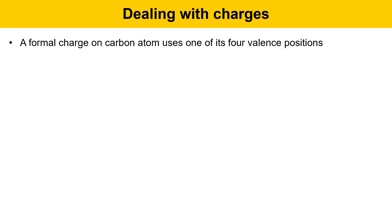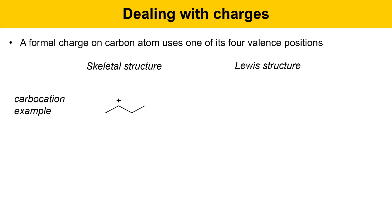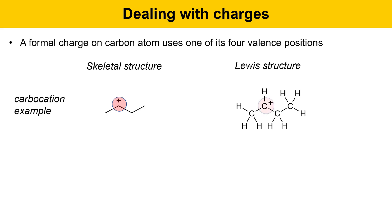This slide covers dealing with charges. A formal charge on a carbon atom uses one of its four valence positions. Here's an example of a carbocation — a carbon-based structure that has a positive charge on one of the carbons. The second carbon from the left contains a positive charge. To convert this into a Lewis structure, we count the number of valence positions being used on that carbon. It is making bonds to two other carbons, using two of its four valence positions, and the positive charge uses another one. That leaves one valence position that must be occupied by a hydrogen. Therefore, in the Lewis structure, the carbon bearing the positive charge has one hydrogen atom not indicated in the skeletal structure.